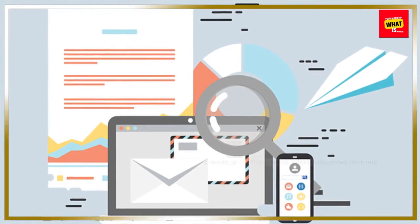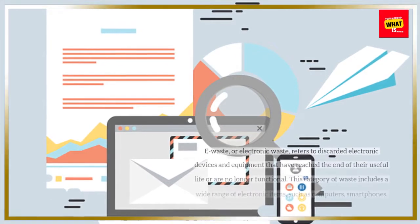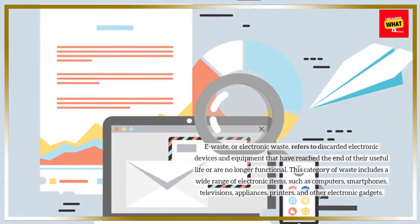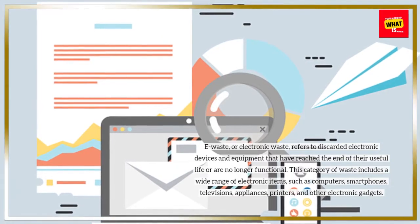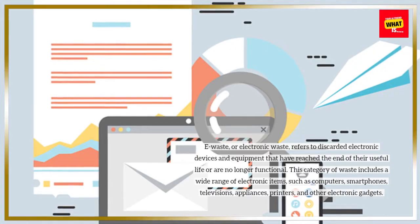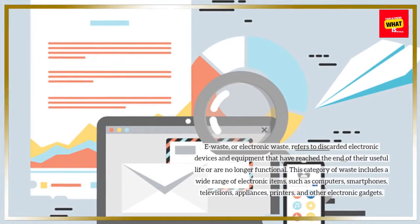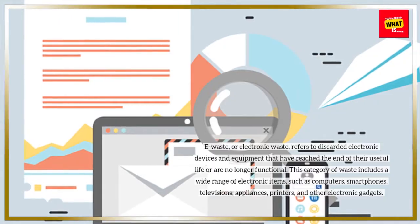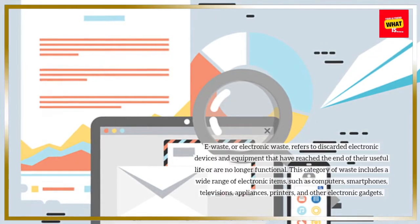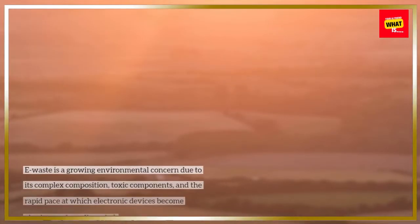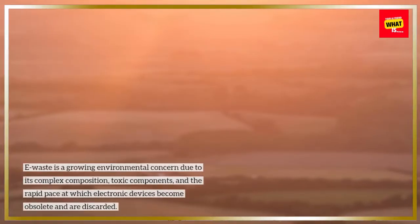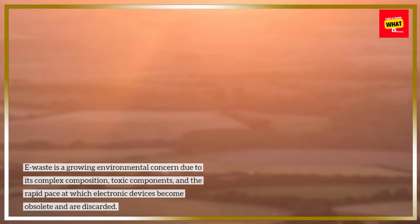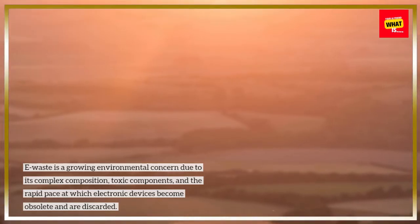E-waste, or electronic waste, refers to discarded electronic devices and equipment that have reached the end of their useful life or are no longer functional. This category of waste includes a wide range of electronic items, such as computers, smartphones, televisions, appliances, printers, and other electronic gadgets. E-waste is a growing environmental concern due to its complex composition, toxic components, and the rapid pace at which electronic devices become obsolete and are discarded.